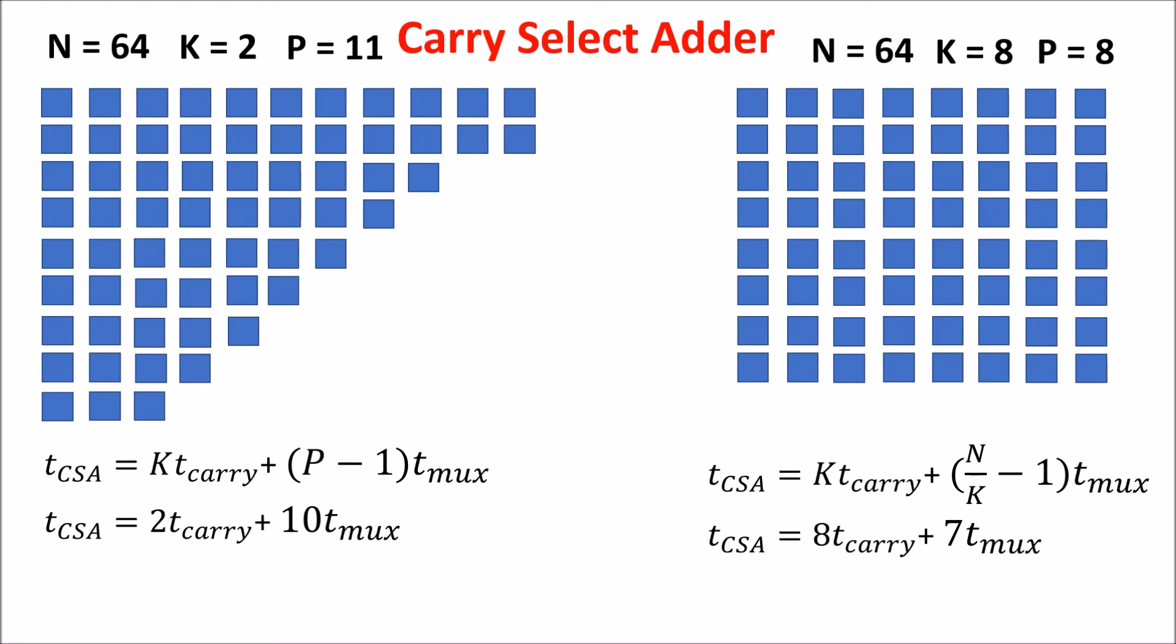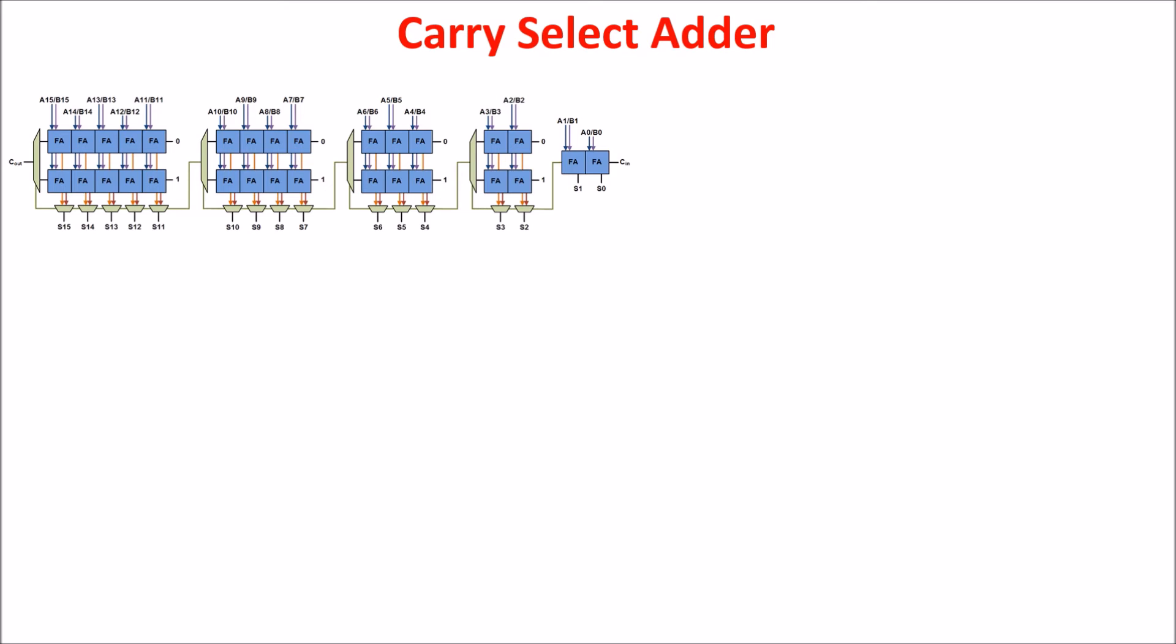So in the case of T-mux equals T-carry, we have 12 versus 15 in favor of the smart arrangement, but we have to add that T-mux is generally a bit less than T-carry, so we save even more time. Now we want the general formula for getting the right number of blocks for a given N number of bits.